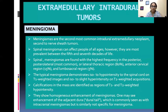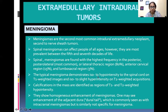Meningiomas are the second most common intradural extramedullary neoplasm, secondary to nerve sheath tumors, most prevalent between the 5th and 7th decades of life. They are found with highest frequency in the posterior, posterolateral or lateral thoracic, anterior cervical, and lumbosacral regions. The typical meningioma demonstrates iso-to-hypo intensity on T1 and iso-to-slight hyper intensity on T2. Calcifications appear as regions of T1 and T2 hypo intensity. They show homogeneous enhancement, and an enhancing dural tail may be seen but is not specific for meningioma.